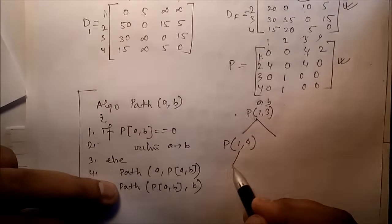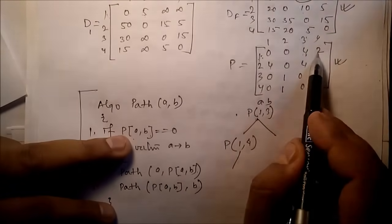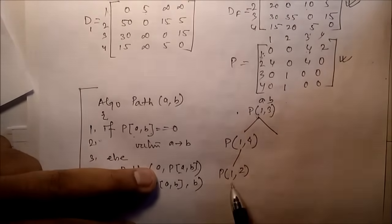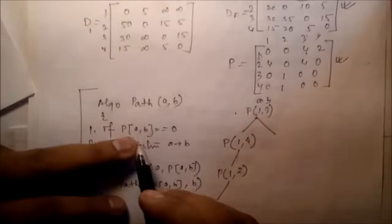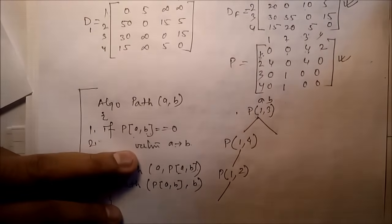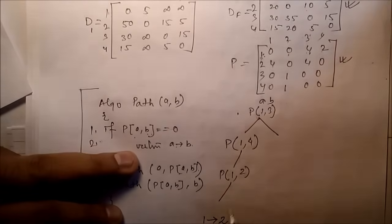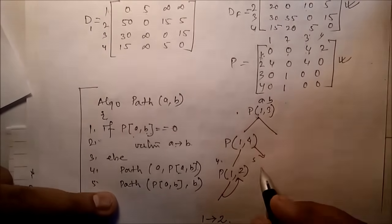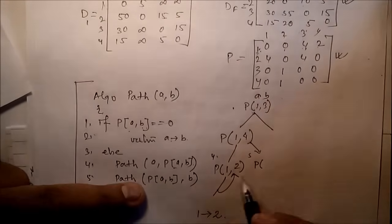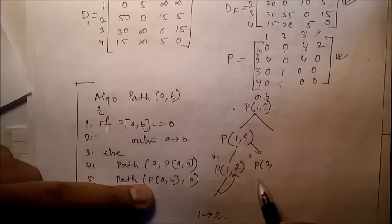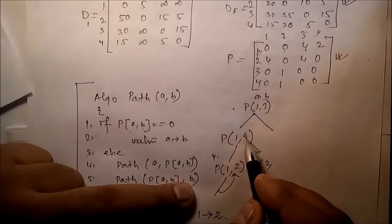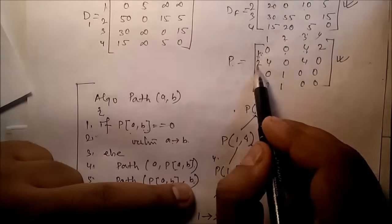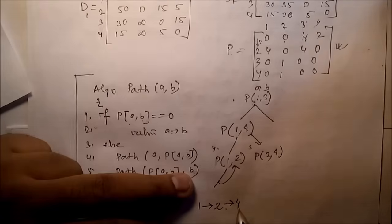Now recursive call: check P[1][4]. P[1][4] is 2 (not zero), so path(1, P[1][4]) = path(1, 2). Check P[1][2] — it is zero, so we return: there is a path from 1 to 2. Then on the fifth line, we call path(P[1][4], 4) = path(2, 4). P[2][4] is zero, so there is a direct path from 2 to 4 — return.